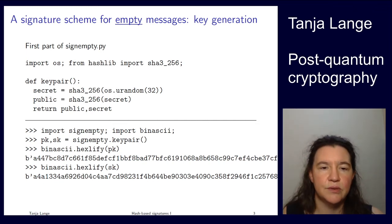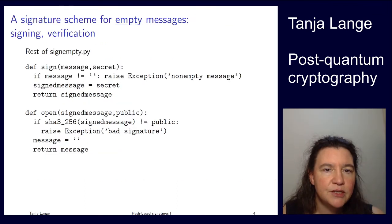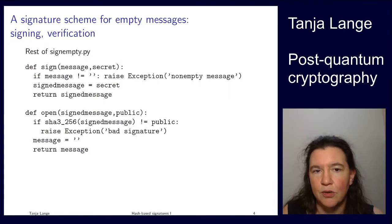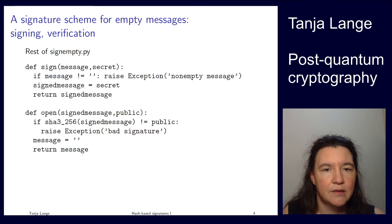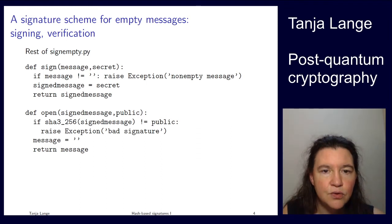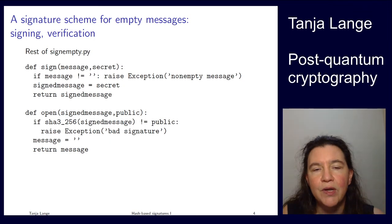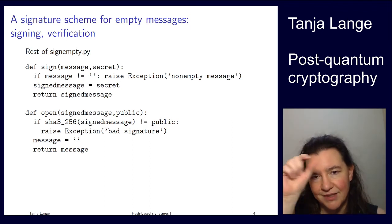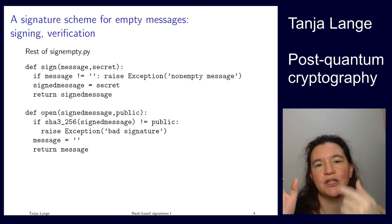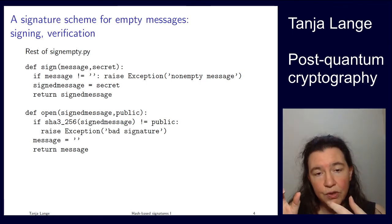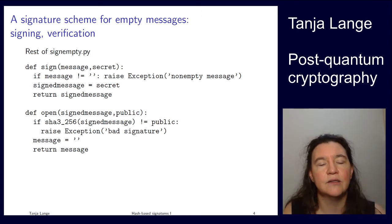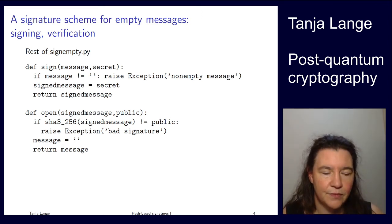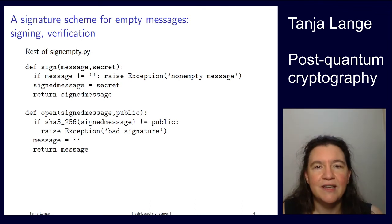Here's an example: we grab randomness, hash it for the secret key, hash it again for the public key, and both are printed as hex strings. To sign the empty message, we verify the message is truly empty, then release the secret — the pre-image — as the signed message. To verify, the verifier takes the signed message, hashes it, and checks that it equals the public key. If it doesn't match, it's a bad signature; otherwise the empty message is accepted.